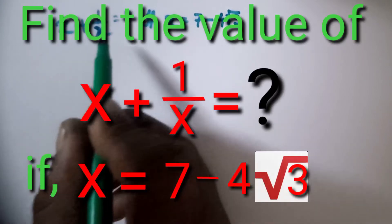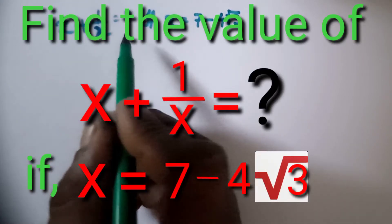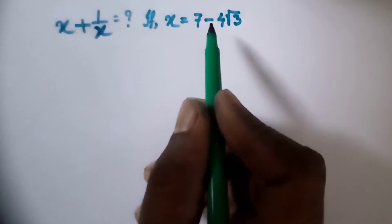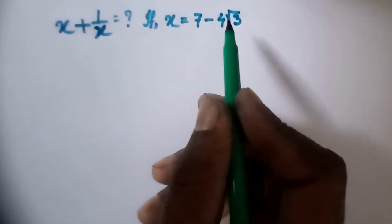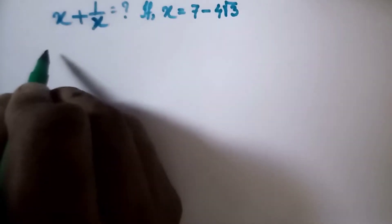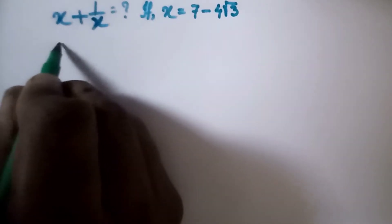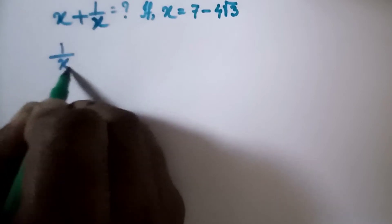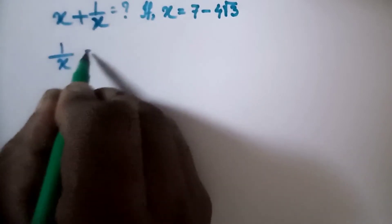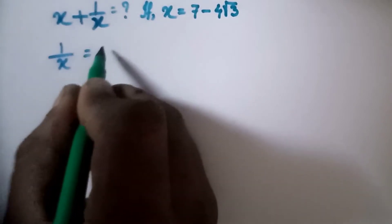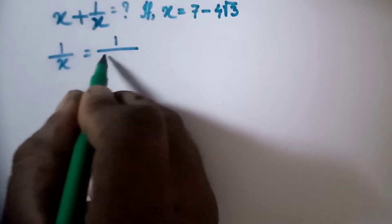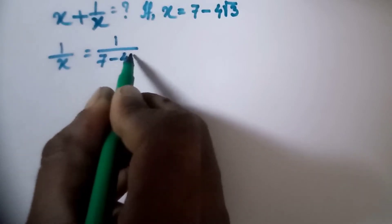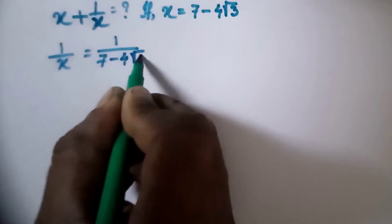What is the value of x plus 1 by x, if x is equal to 7 minus 4 root 3? First we need to find the value of 1 by x. 1 by x is equal to 1 over 7 minus 4 root 3.